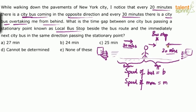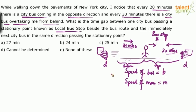Now the key point: the distance between any two consecutive city buses — whether coming from the opposite direction or from behind — is equal. Two consecutive buses starting from the same point are all traveling at the same speed, so the gap between them is fixed. Let us call this distance d.